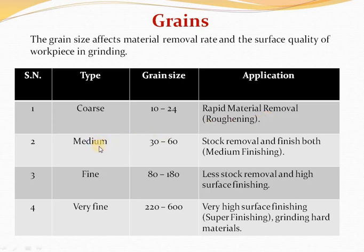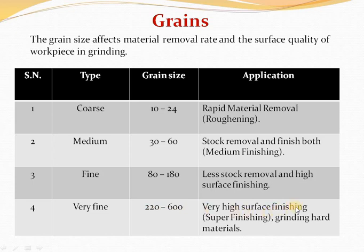Fine grains: medium grains से भी size में छोटा, एक inch में 80 से 180; used for less stock removal and high surface finishing। Very fine grains: बहुत ही छोटा, एक inch में 220 से 600; used for very high surface finishing — that means super finishing — and grinding hard materials। जब कोई wheel बनाते हैं तो इसी प्रकार से grains choose करते हैं।